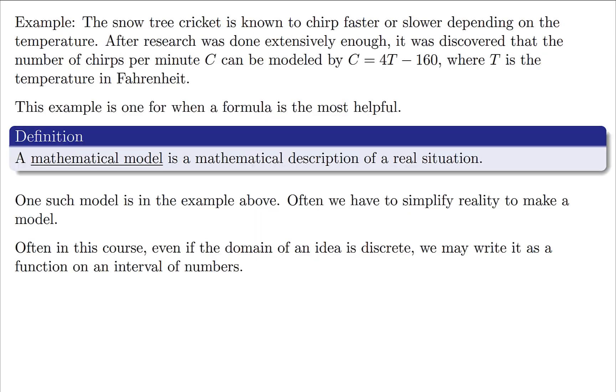Finally, let's take an example of a good way to look at data with a formula. Here's an example about the snow tree cricket. It's known to chirp faster or slower depending on the temperature. Generally speaking, the higher the temperature the faster it chirps, the lower the temperature the slower it chirps. Using research, scientists discovered they could use this equation C = 4T - 160, where T is in Fahrenheit and C is the number of chirps per minute. So this is a great time to use a formula to describe what's going on. This is what we call a mathematical model. It's some description of a real life situation that often comes with an equation.